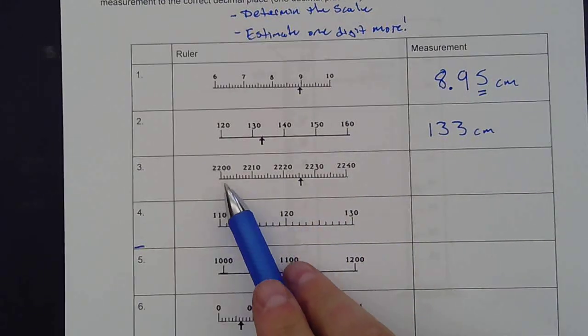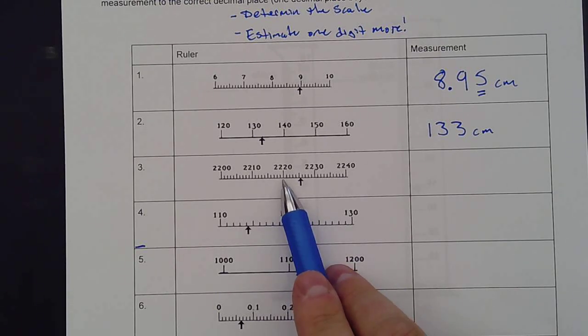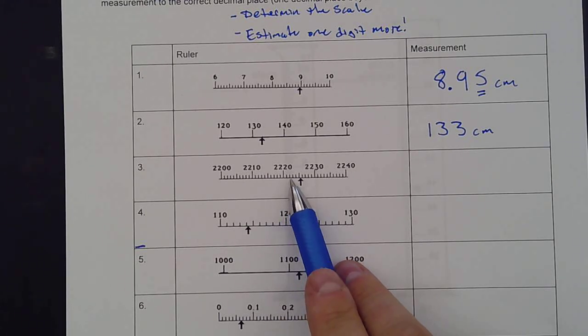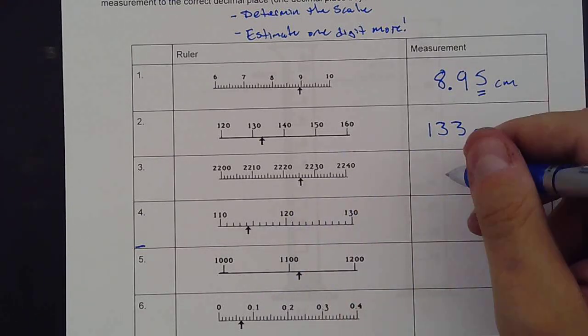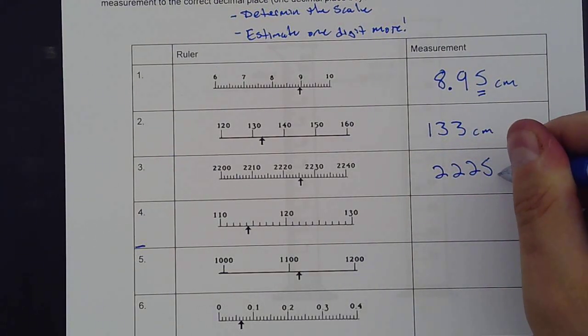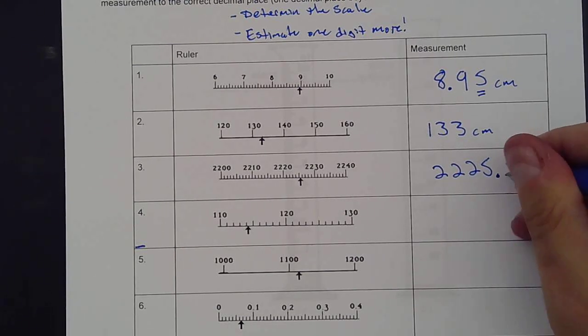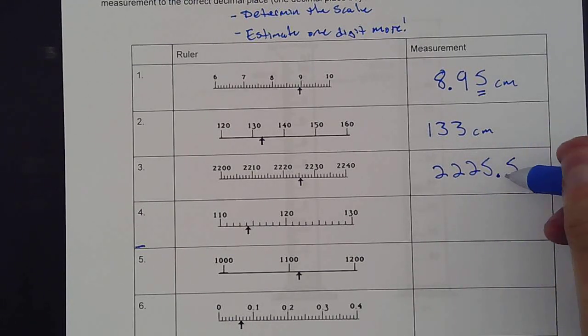Now we have the next one. This is 2,200, 2,210, 2,220, 2,230. So these are going up by tens, each one. So 2,221, 2,222, all the way to 2,225. I have a decimal point here because I'm estimating that little spot in between. I think that one's right in the middle, so 2,225.5.